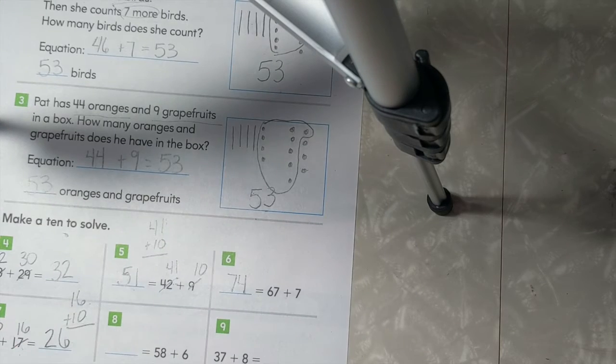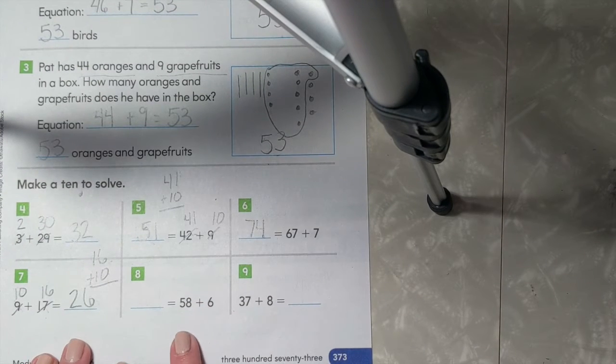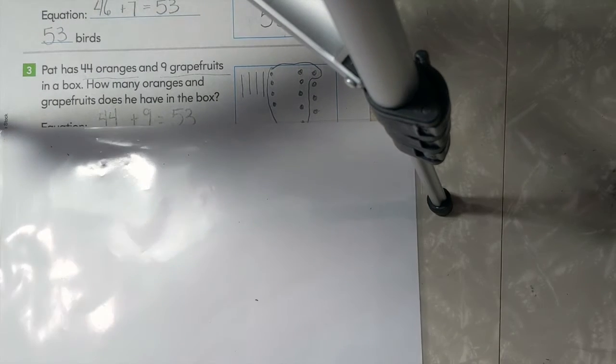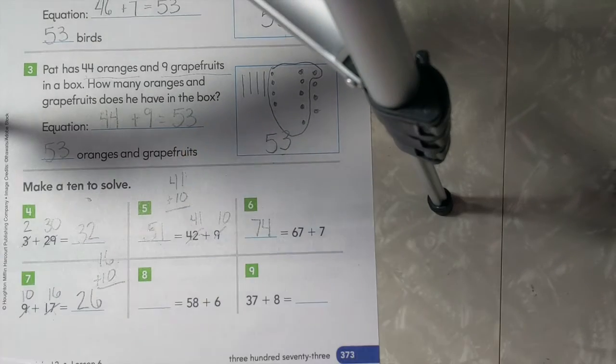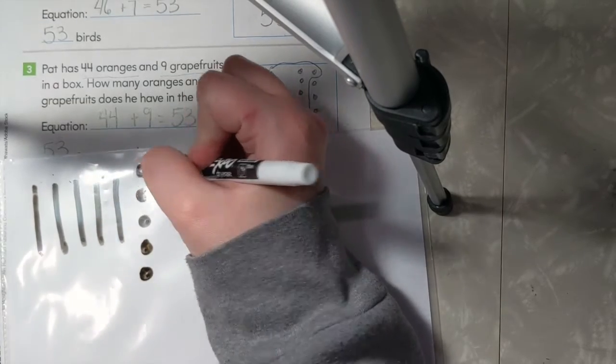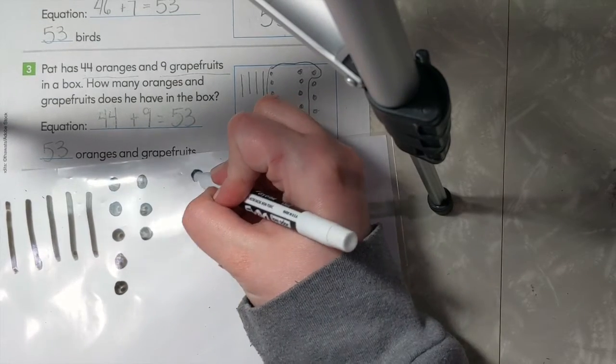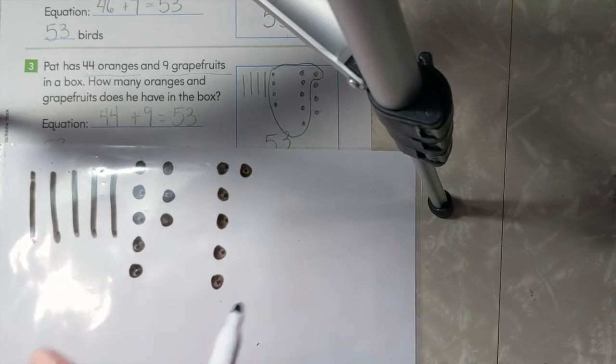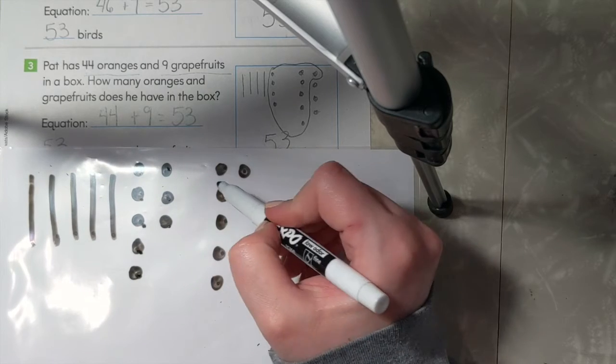Let's try number 8 together. We'll go ahead and draw a picture for this one. So we have 58 plus 6. I will draw my 58: 1, 2, 3, 4, 5, 6, 7, 8. And then we will add 6 more 1's: 1, 2, 3, 4, 5, 6. Let's count on to make a group of 10: 1, 2, 3, 4, 5, 6, 7, 8, 9, 10.